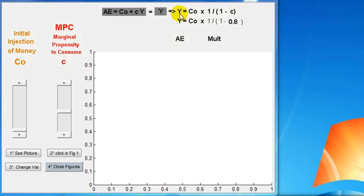So what we want to see here is how this works for different values of C0 and C, for initial injection and marginal propensity to consume.